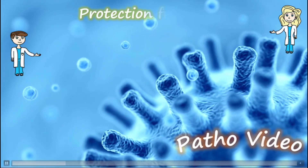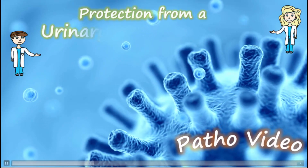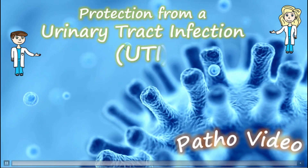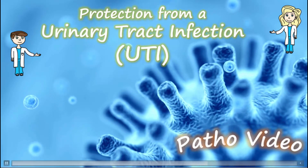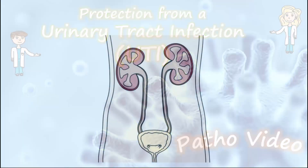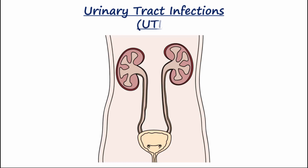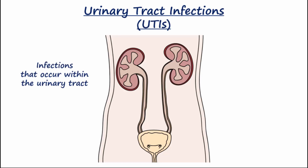This video describes how a healthy urinary system protects itself from urinary tract infections. UTIs describe bacterial infections that may occur within different areas of the urinary tract. In clinical practice, UTI refers to an infection of the kidney called pyelonephritis, or even more commonly to a bladder infection called cystitis. Infection of the urethra is urethritis.